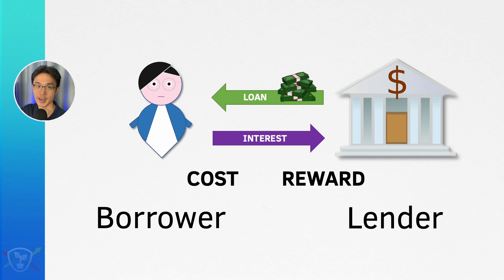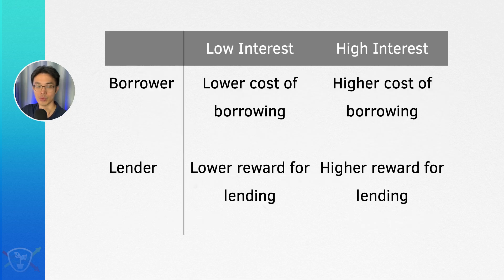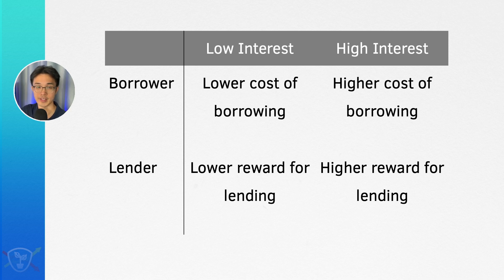Recall that interest rates are basically a cost to the borrower and a reward or incentive to the lender. So when interest rates are high, it's more expensive to borrow, but also more rewarding to lend. Whereas when interest rates are low, it's cheaper to borrow, but also less rewarding and there's less incentive to lend.